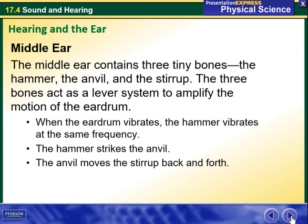The middle ear contains three tiny bones: the hammer, the anvil, and the stirrup. The three bones act as a lever system to amplify the motion of the eardrum. When the eardrum vibrates, the hammer vibrates at the same frequency. The hammer strikes the anvil, and the anvil moves the stirrup back and forth.